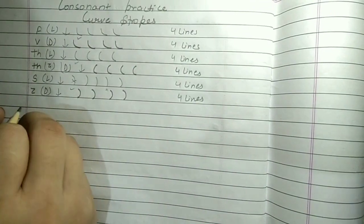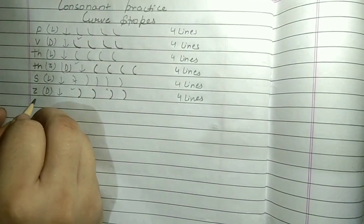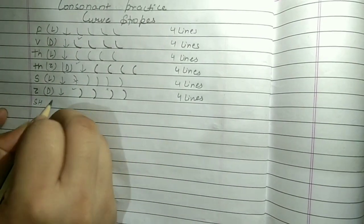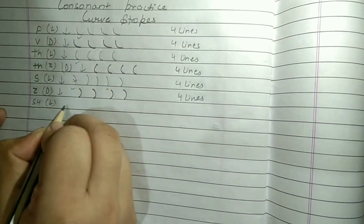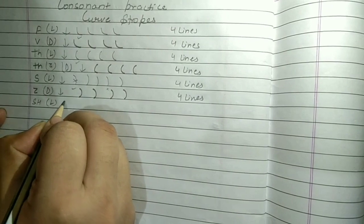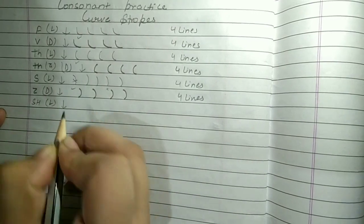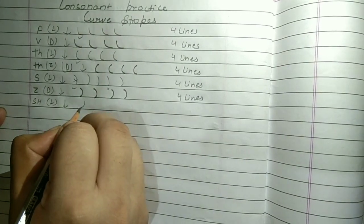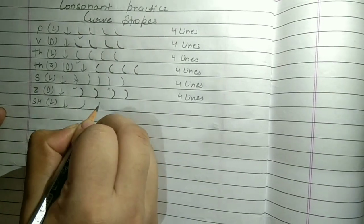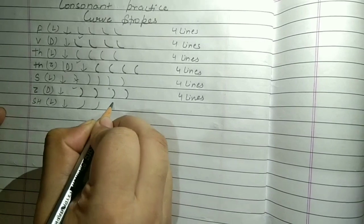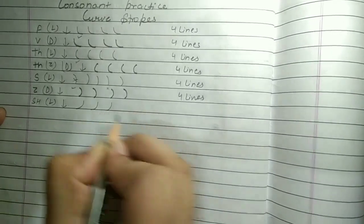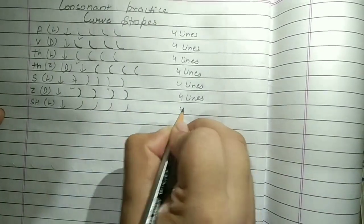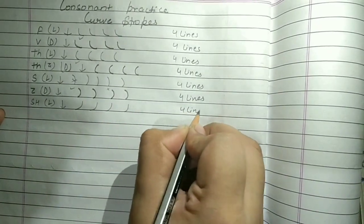The next consonant is SHA. SHA is our light consonant, made in the downward direction. We will practice SHA four lines.